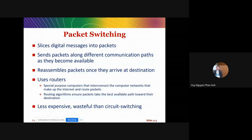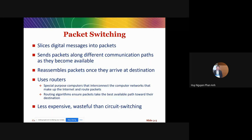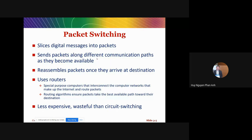The first one is packet switching. For example, when you send a photo to your friend using Zalo, Messenger, or Instagram, that photo is basically a collection of bits — ones and zeros — digitally. It will not send the whole collection of bits at one time, but will slice the message into packages. That's the packet — it slices the bits into smaller portions.